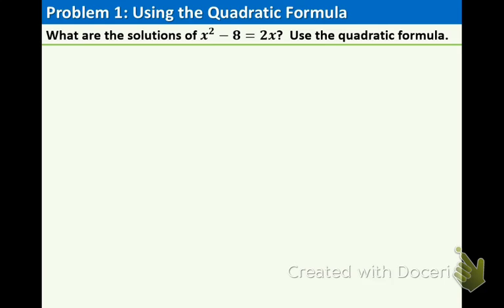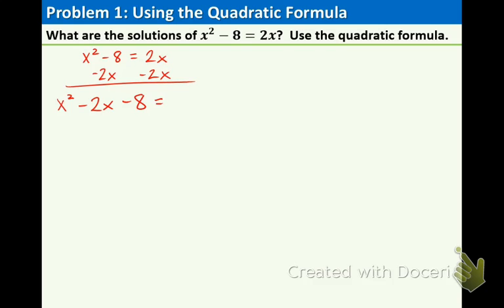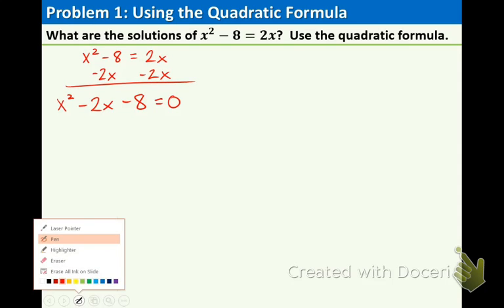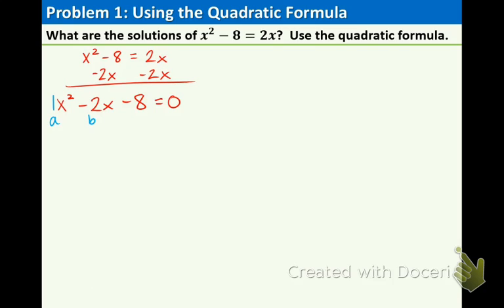Example one says: what are the solutions of x squared minus 8 equals 2x? Use the quadratic formula. It has to be in standard form before you use the quadratic formula, which means everything should be on the left side of the equation. Currently that 2x is on the right side, so we need to move it over by using subtraction. Now, remember ax squared plus bx plus c needs to be the order: x squared comes first, the negative 2x comes in the middle, and the negative 8 is at the end, with 0 on the other side. So now it is in standard form. Let's identify our a, b, and c: a is 1, b is negative 2, and c is negative 8.